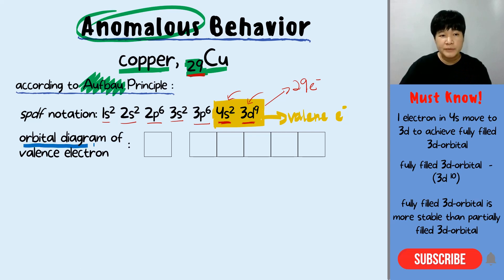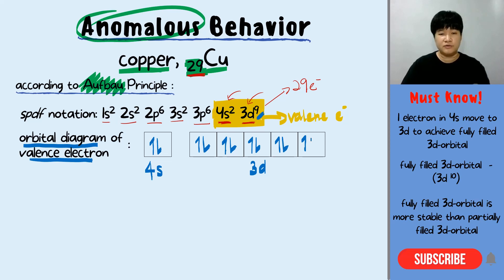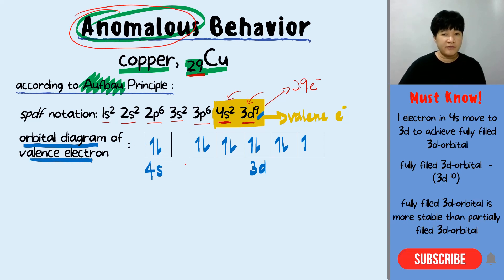I want to draw the orbital diagram for the valence electrons so you can see clearly why we have the anomalous behavior. The 4s has two electrons, and the 3d has nine electrons. According to Hund's rule, singly first — five single and then pair up — because 3d has nine electrons. That is the orbital diagram for 3d with nine electrons.